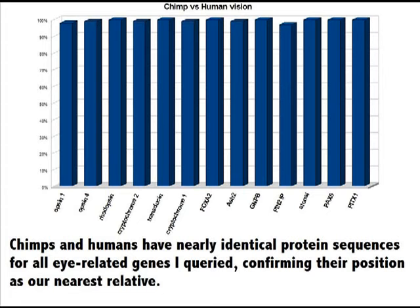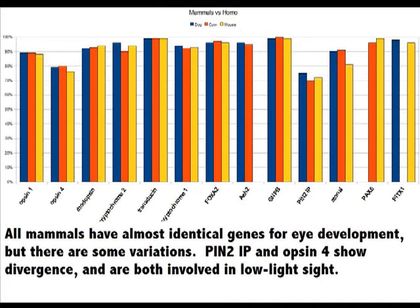We need to zoom out a little to see any differences at all. Here is a comparison of several important visual system genes across a variety of mammals versus the human protein sequence. Blue is dog, red is cow, and yellow is mouse. Note that all three mammals have about the same proteins for eye formation, as we might expect.